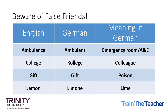You might also encounter false friends, which are words in the unknown language which sound and look similar to words in English but in actuality have very different meanings. Some examples of false friends that might appear between English and German are listed in the table above.